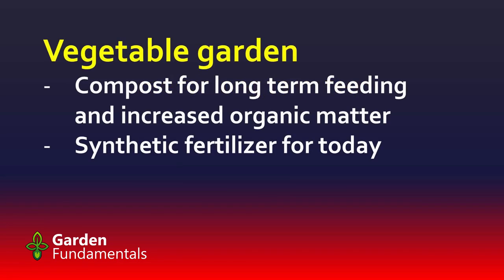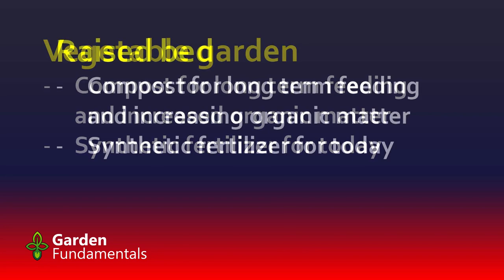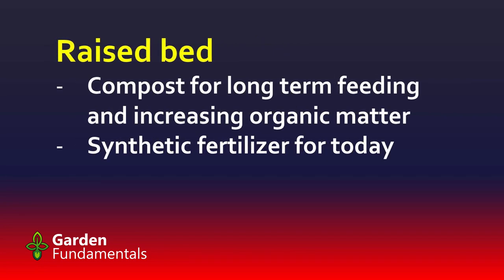Let's look at some specific situations. For your vegetable garden, here's what I recommend: add compost for long-term feeding and for increasing organic matter — over time your soil will get better and better. But the compost you add today in a new garden isn't going to do very much. For this year's vegetables, you want to use some synthetic fertilizer to feed them now. Once you've been doing this for two or three years, you'll have built up the amount of compost in the soil and you can stop adding the synthetic fertilizer.